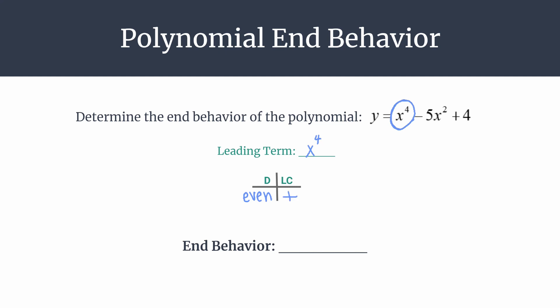So from these two things, we can now draw our conclusion about end behavior. Just think about the most basic even parent function, which is y equals positive x squared. We should know what that graph looks like, that u opening up, because it's positive.